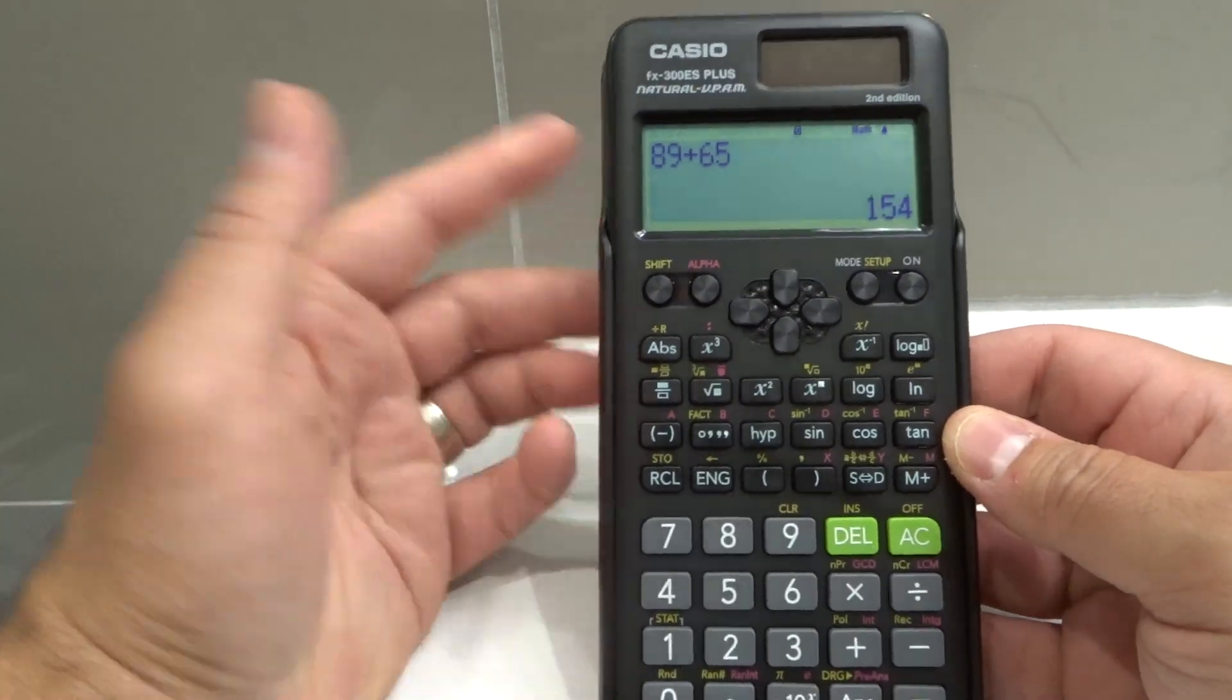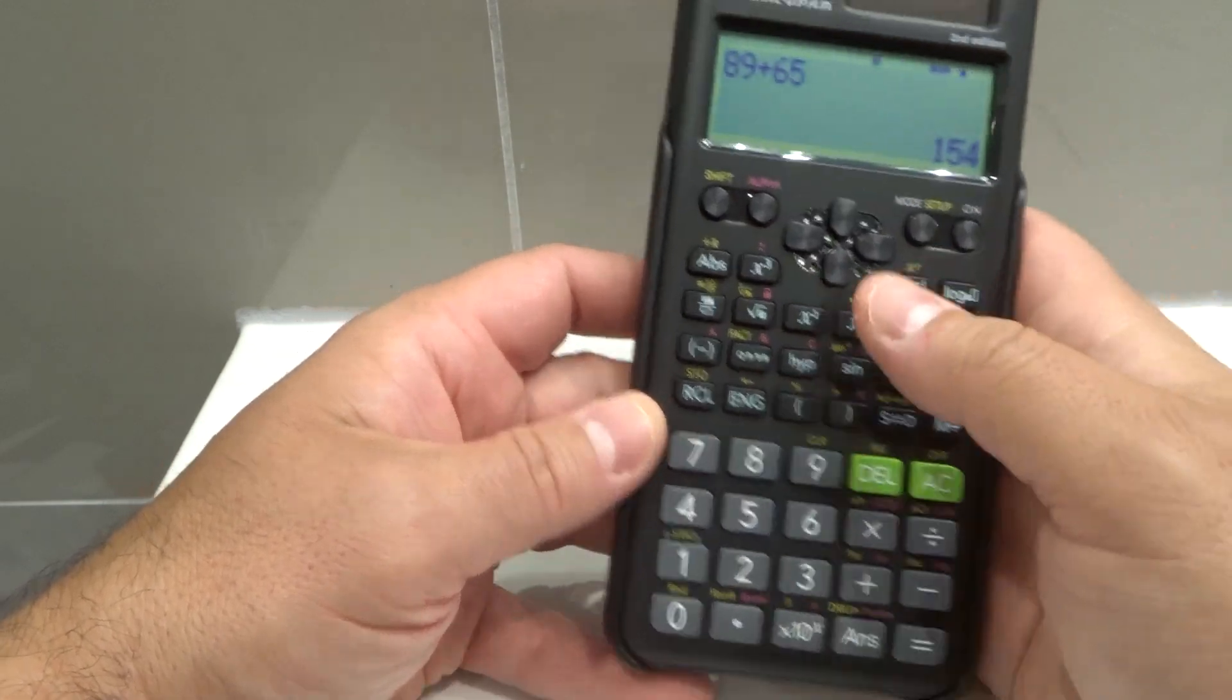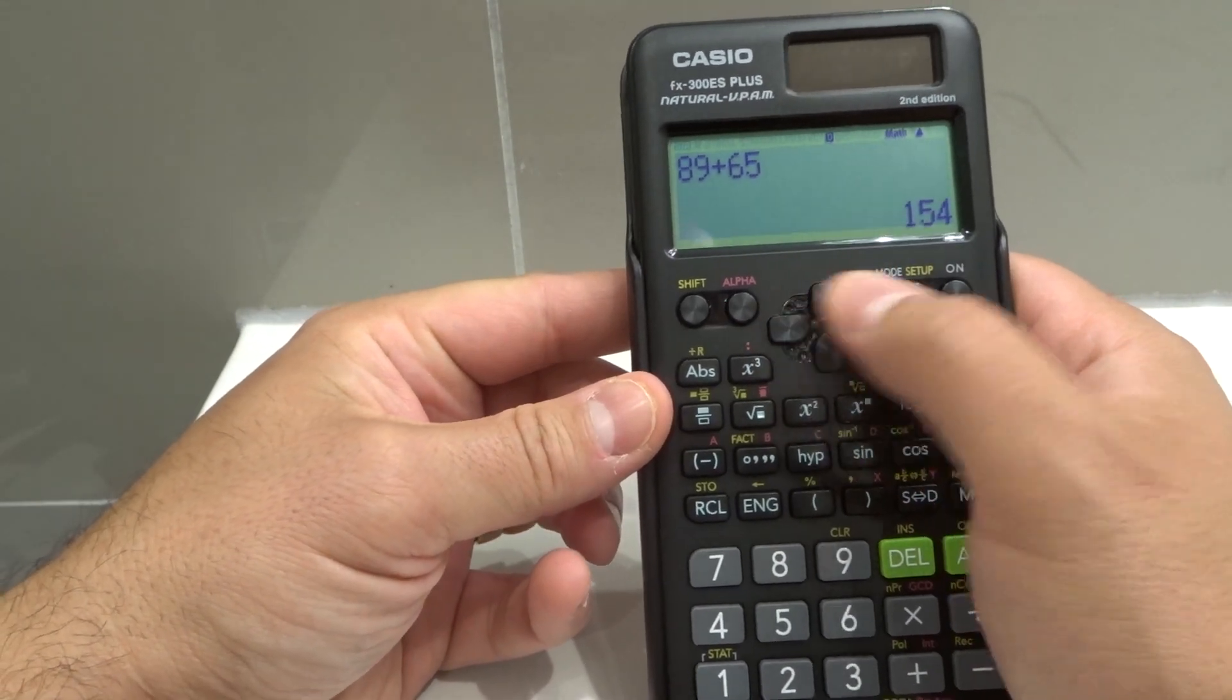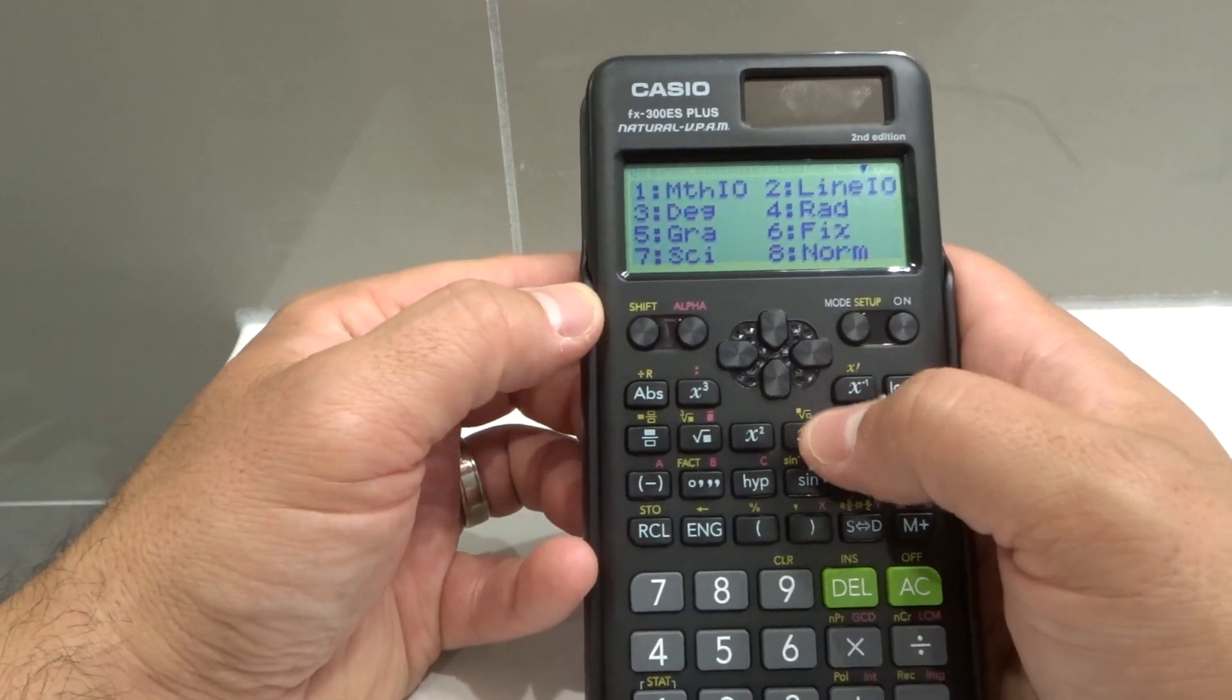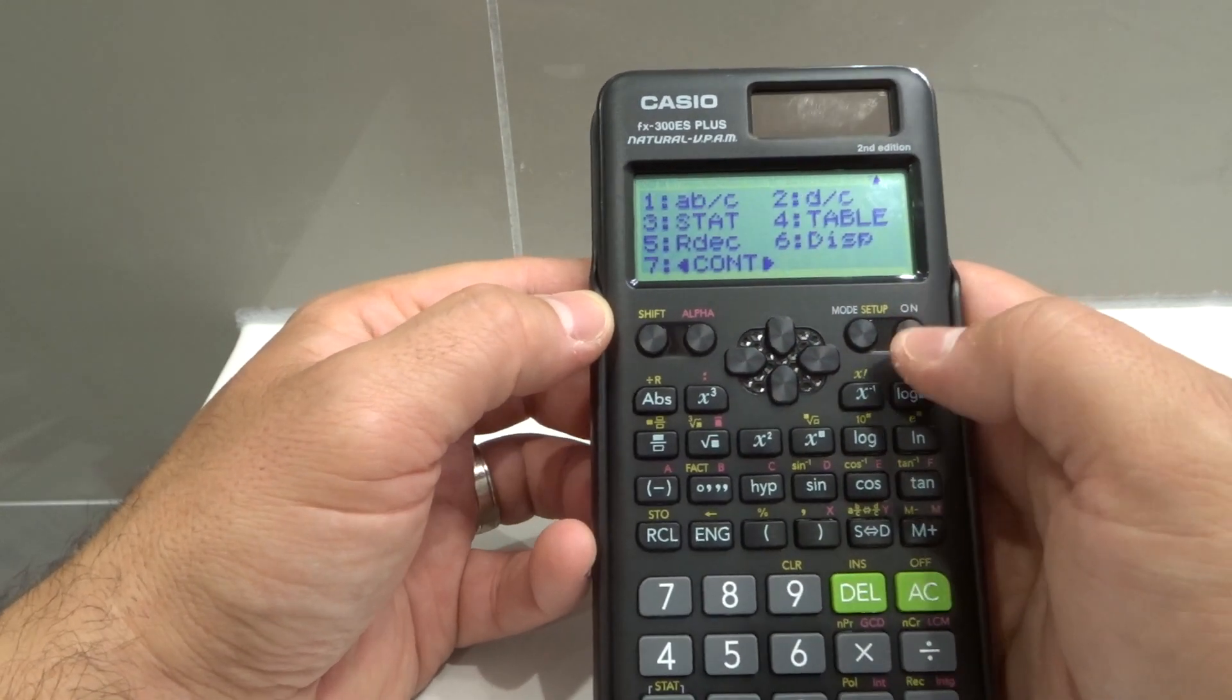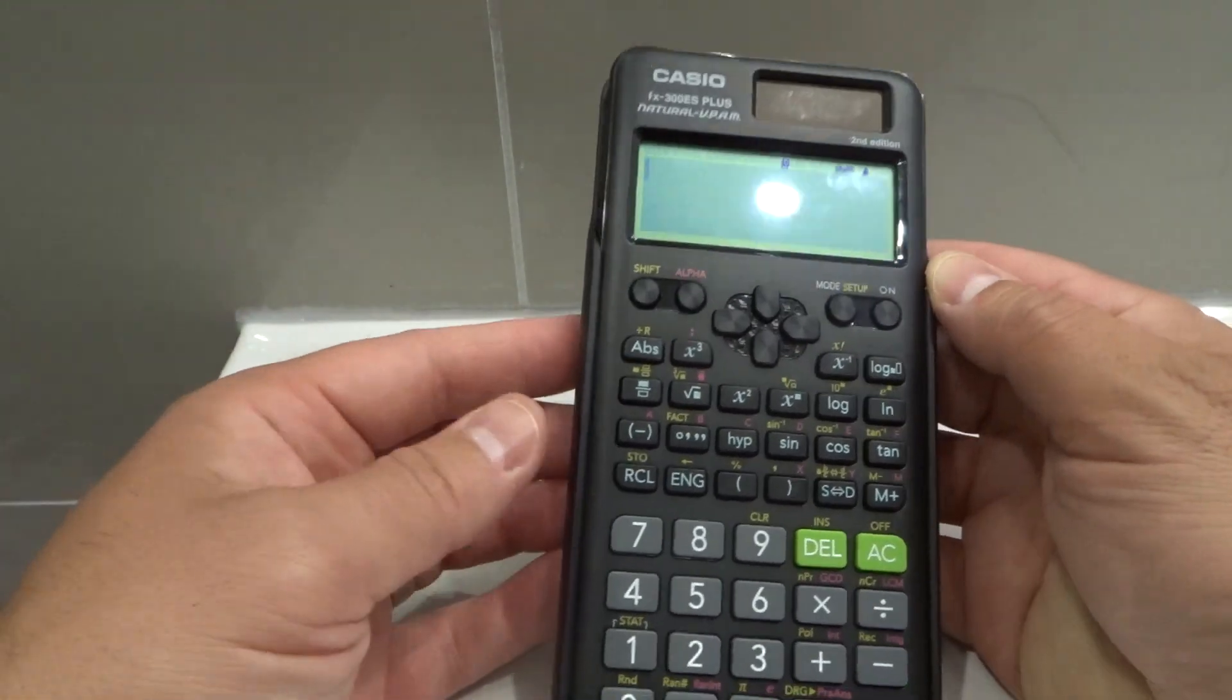But you can also use it for more advanced functions. Anything above the numbers is for advanced functions. And one feature that I love about scientific calculators that have this is the arrow system. It just makes it easier to navigate. So let's say you're going to the setup menu - you can actually click down and it brings you to the next screen. Just a small, simple thing that honestly really makes the world of a difference in terms of ease of use.